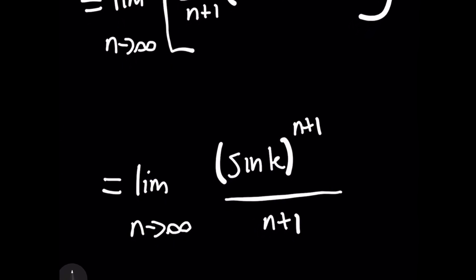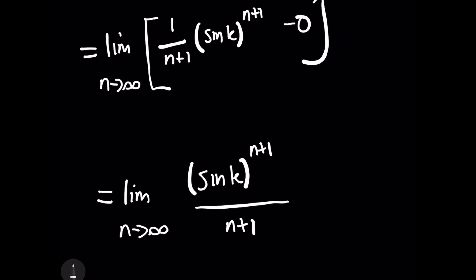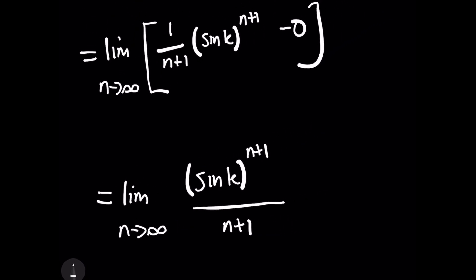Part of that observation is correct — sine of k does oscillate — but it's a mistake to just quit and claim the limit doesn't exist. There's a nifty trick here called the squeeze limit theorem that you're about to learn.